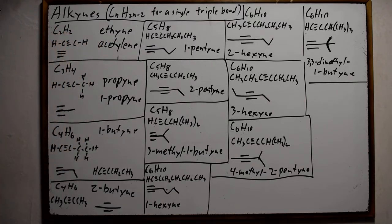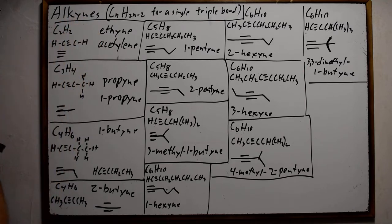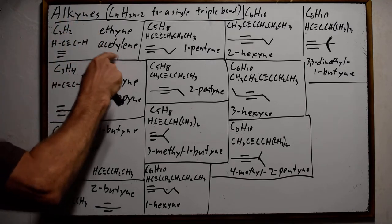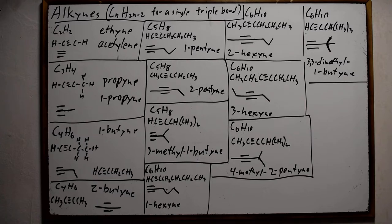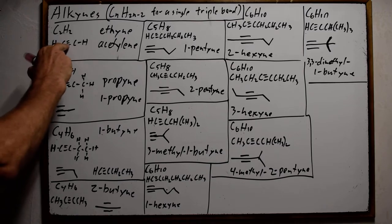The formal name for C2H2 would be ethyne — two carbons gives an ethyl group, with the '-yne' ending. The common name for this is an older name: acetylene. It ends in '-ene' which is confusing unless you know the common name. We go and buy acetylene for torches and that sort of thing, but its formal name, showing it is an alkyne, would end in '-yne'.